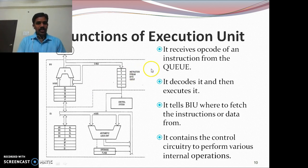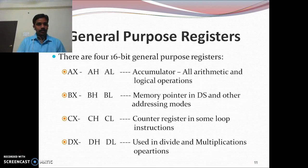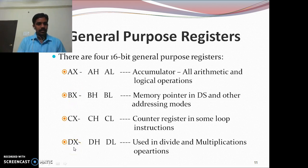The functions of the Execution Unit are to decode and execute instructions. It takes each instruction from the queue, decodes it, then executes it. The general purpose registers available in the Execution Unit are four 16-bit registers: AX, BX, CX, and DX. These are the general purpose registers used by the Execution Unit to store data temporarily while performing calculations.